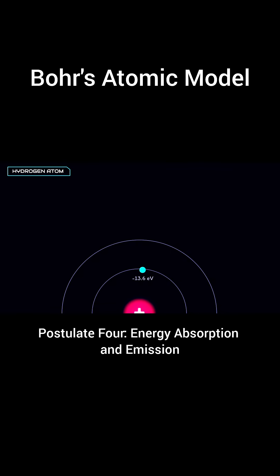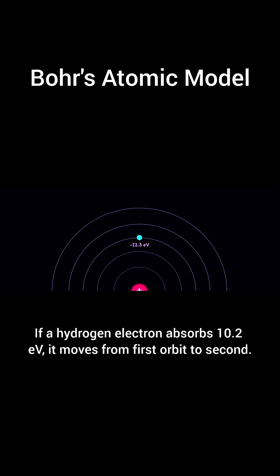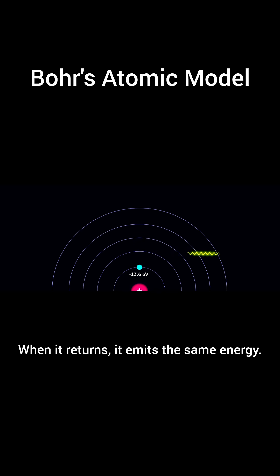Postulate 4: Energy absorption and emission. Electrons can jump to higher orbits if they gain energy. If a hydrogen electron absorbs 10.2 eV, it moves from first orbit to second. When it returns, it emits the same energy.